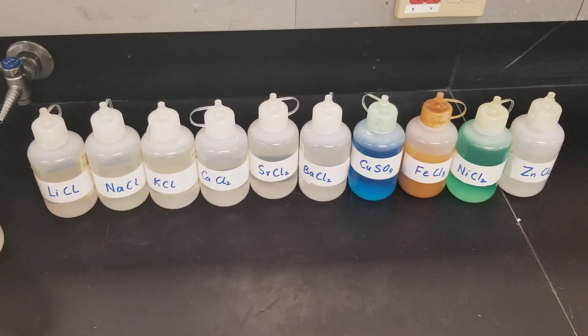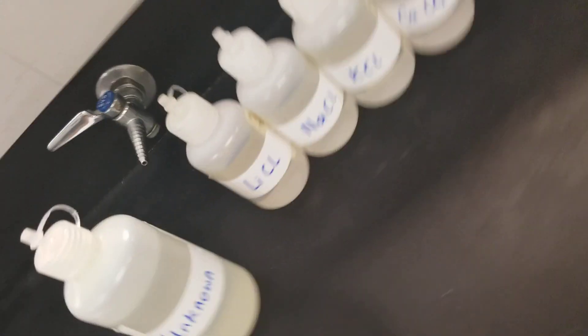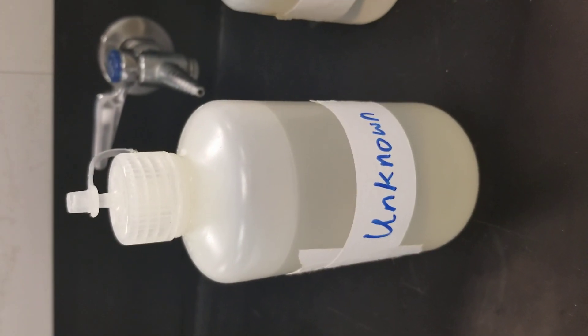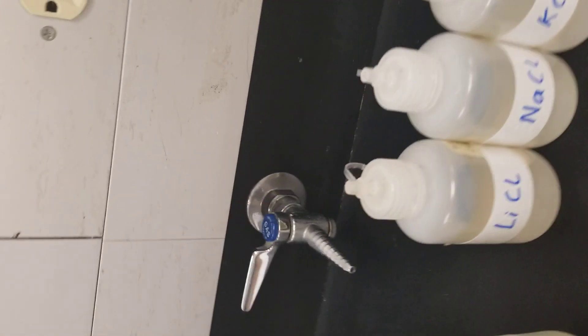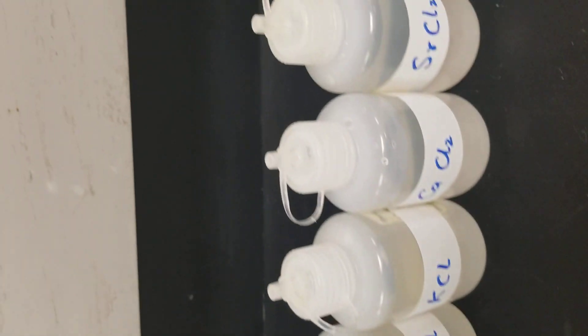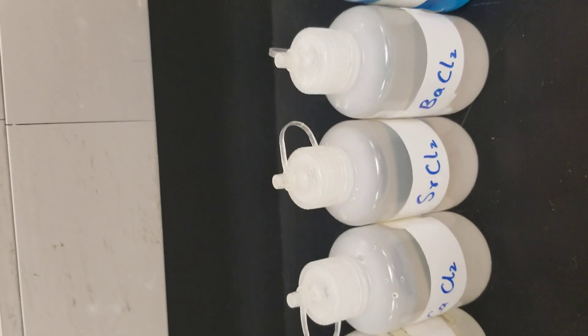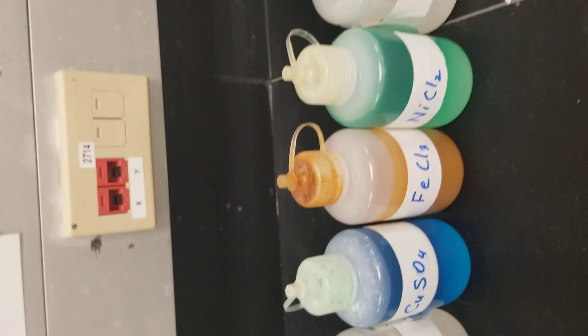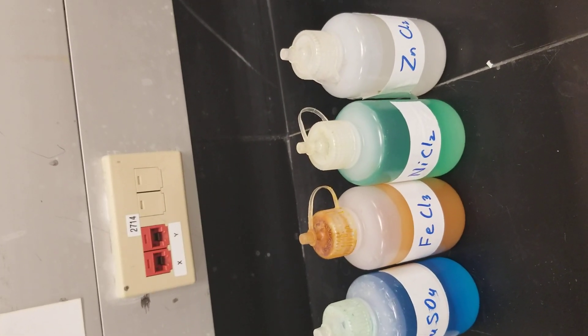For the lab, we have 10 different known metal halide solutions and one unknown metal halide solution. Out of these 10 solutions, the first three are Group 1 alkali metals, the second three are Group 2 alkaline earth metals, and the last four are transition metals.